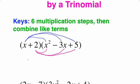In blue, x times x squared is x cubed. X times negative 3x is negative 3x squared. And lastly, x times positive 5 is plus 5x.